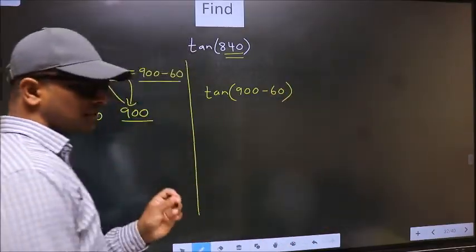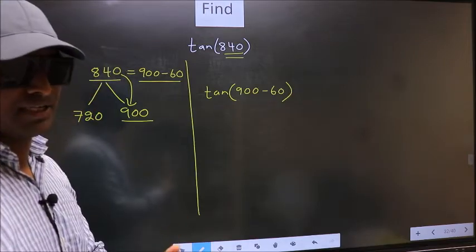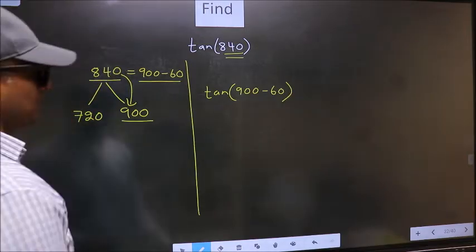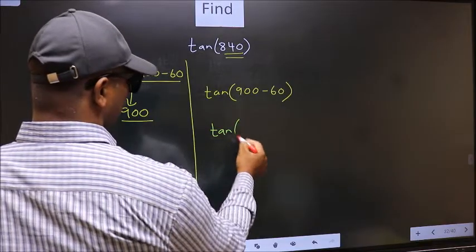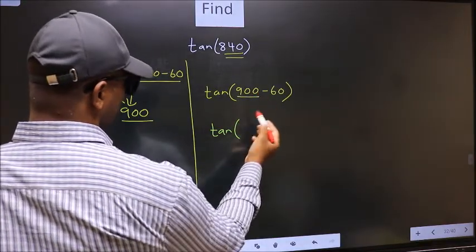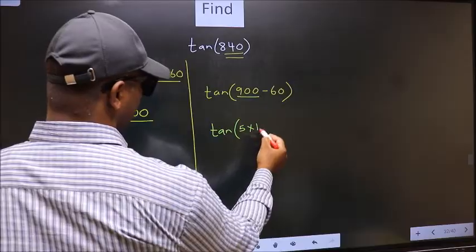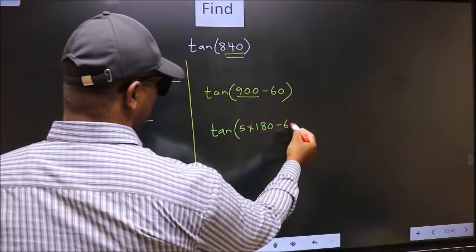This is your step 1. Next, tan. In place of this, now we should write 5 into 180 minus 60.